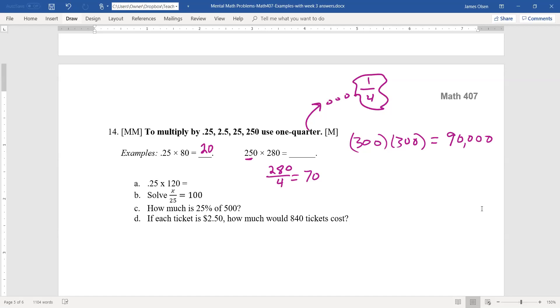So since 250 is a little less than 300 and 280 is a little less than 300, I should expect something less than 90,000, which means my answer is 70,000.